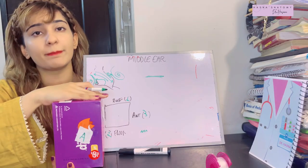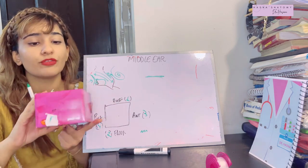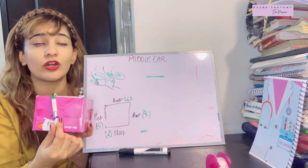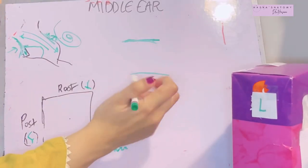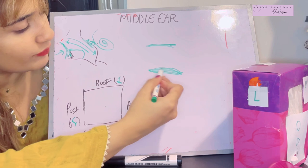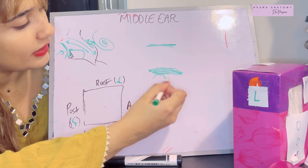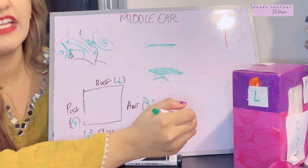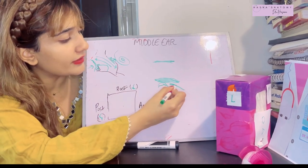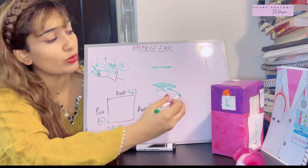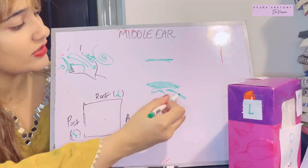Now the floor — the jugular wall — has two contents. First, a thin plate of temporal bone separates the middle ear from the superior bulb of the internal jugular vein. Second, the tympanic canaliculus lies in the floor and carries the tympanic branch of the glossopharyngeal nerve.